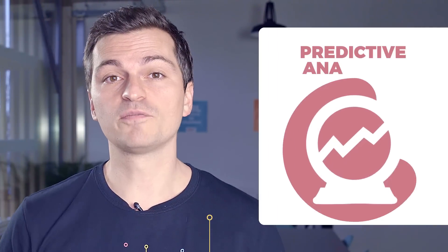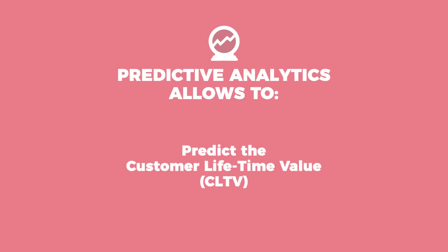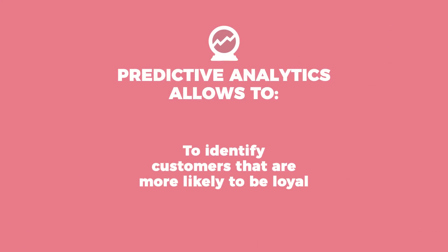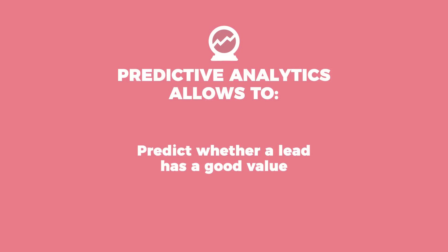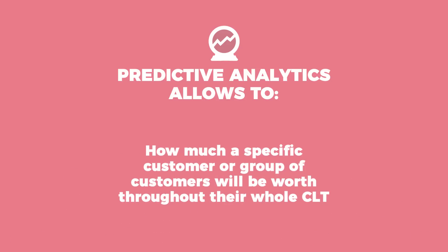At the very top we have predictive analytics — predicting outcomes, often future outcomes based on historical data. Predictive analytics allows marketers and heads of growth to predict the customer's lifetime value, to identify customers that are more likely to be loyal, and to predict whether a lead is of good value or not. How much resources and time should I spend on each specific lead? It also allows us to predict how much a specific customer or group of customers will be worth throughout their whole customer lifetime. It's at the top of our chart because it's quite easy to implement and it's been proven again and again.